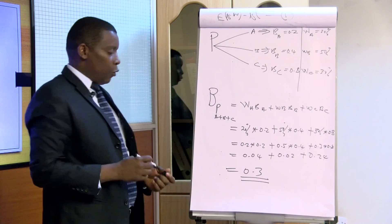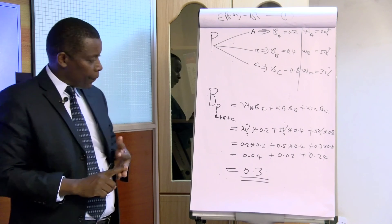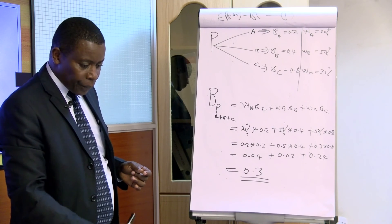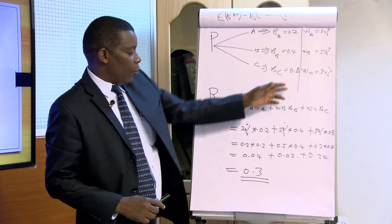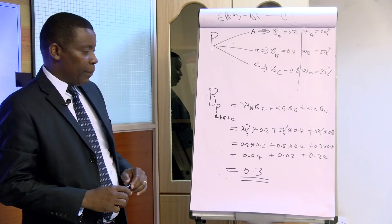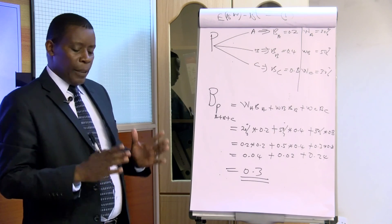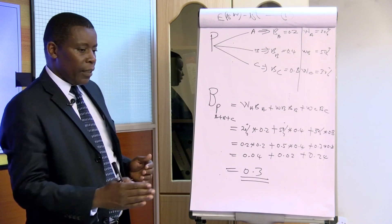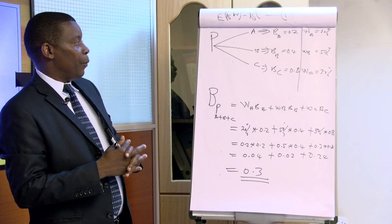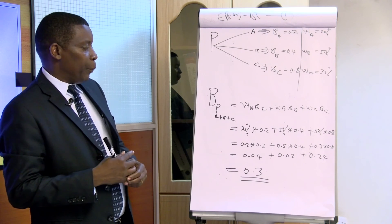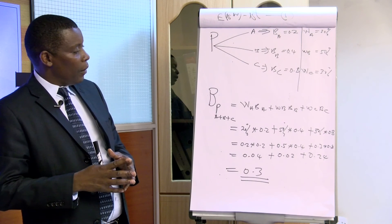That gives us the beta factor of a portfolio comprising asset A, asset B, and asset C equal to 0.48. Having done that, there is a need to interpret this value of beta. The benchmark is what we call the market security, which is hypothetical — we relate everything to the behavior of the market security. If the beta factor of our portfolio is 0.48 and that of the market portfolio is one, what does it mean?